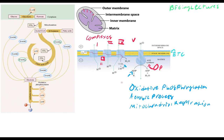What happens is that NADH enters complex one and does a series of reactions, releasing NAD+. Similarly, FADH2 enters complex two and out comes FAD. NAD+ and FAD are in limited supply in the system, so they are recycled and put back into the TCA cycle. NAD+ and FAD are recycled.